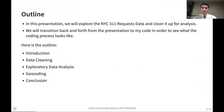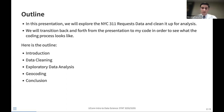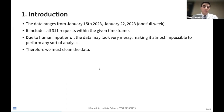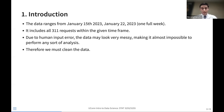I'm going to transition back and forth from the presentation to my code. The outline includes an intro, data cleaning, exploratory data analysis, geocoding, and then a conclusion. The data ranges from January 15th, 2023 up until January 22nd — just one week's worth of data. It includes all the 311 requests within this time frame. Due to human input error, the data may look very messy, making it almost impossible to perform any sort of analysis, so we have to clean it.